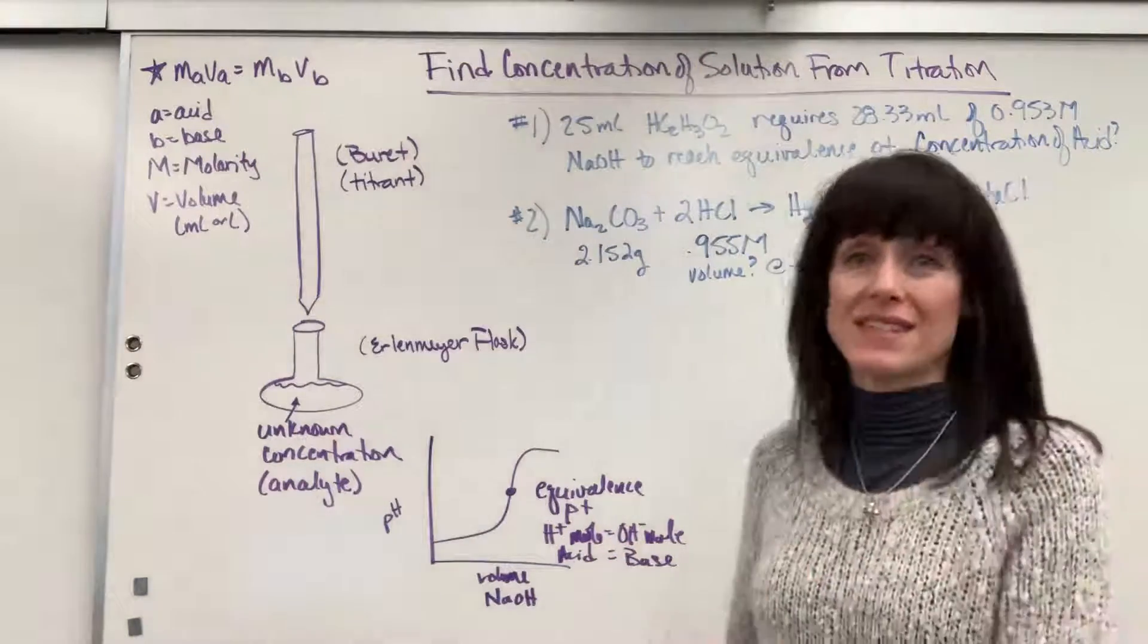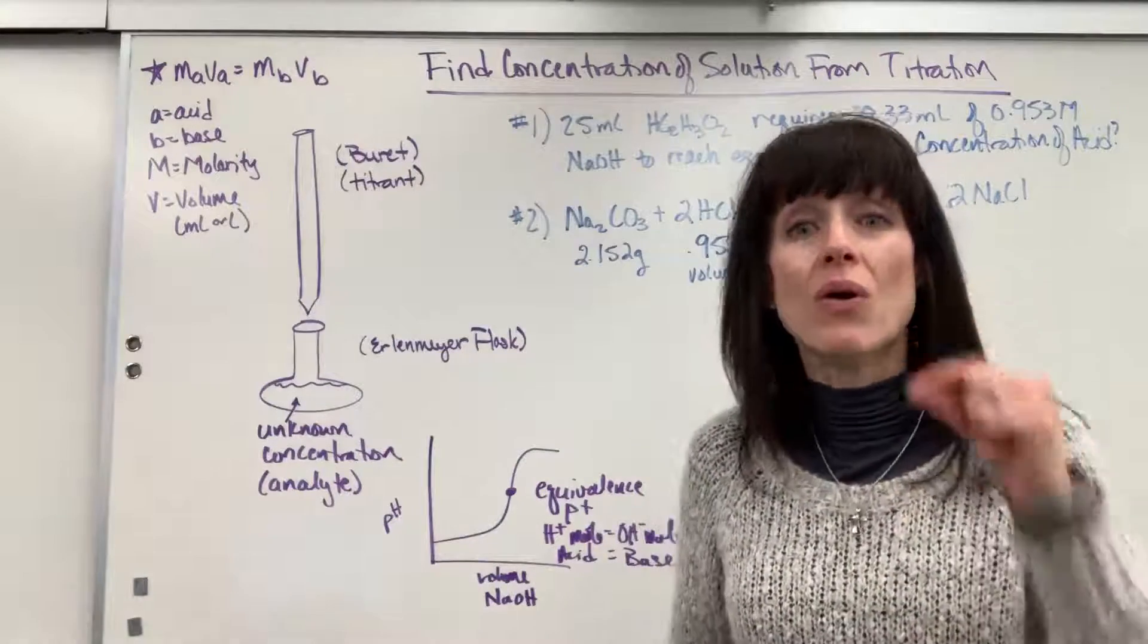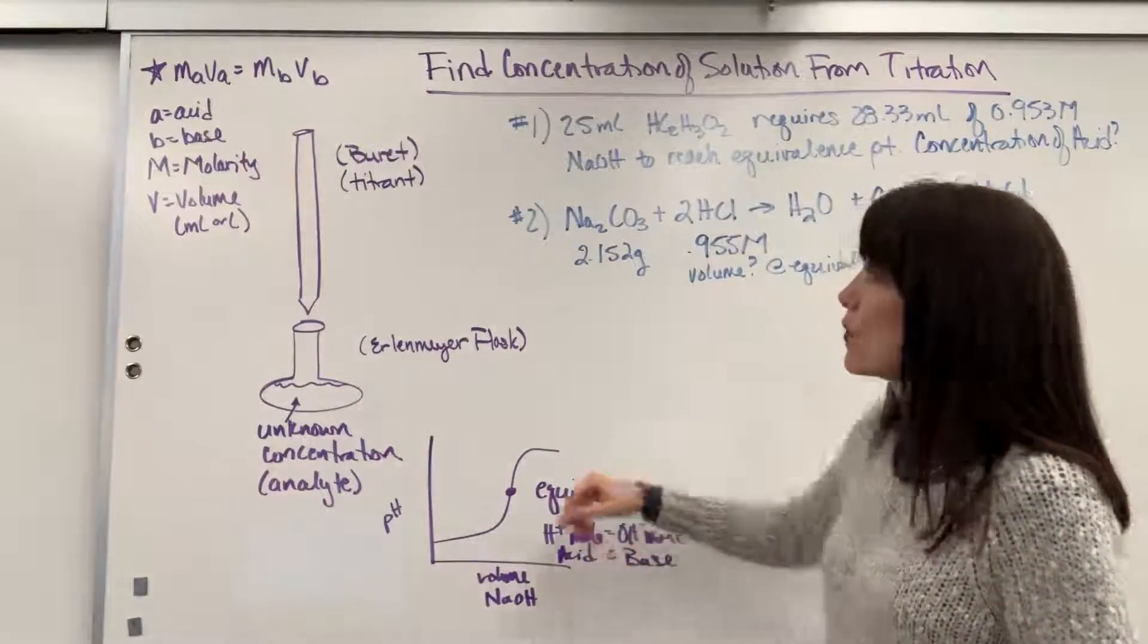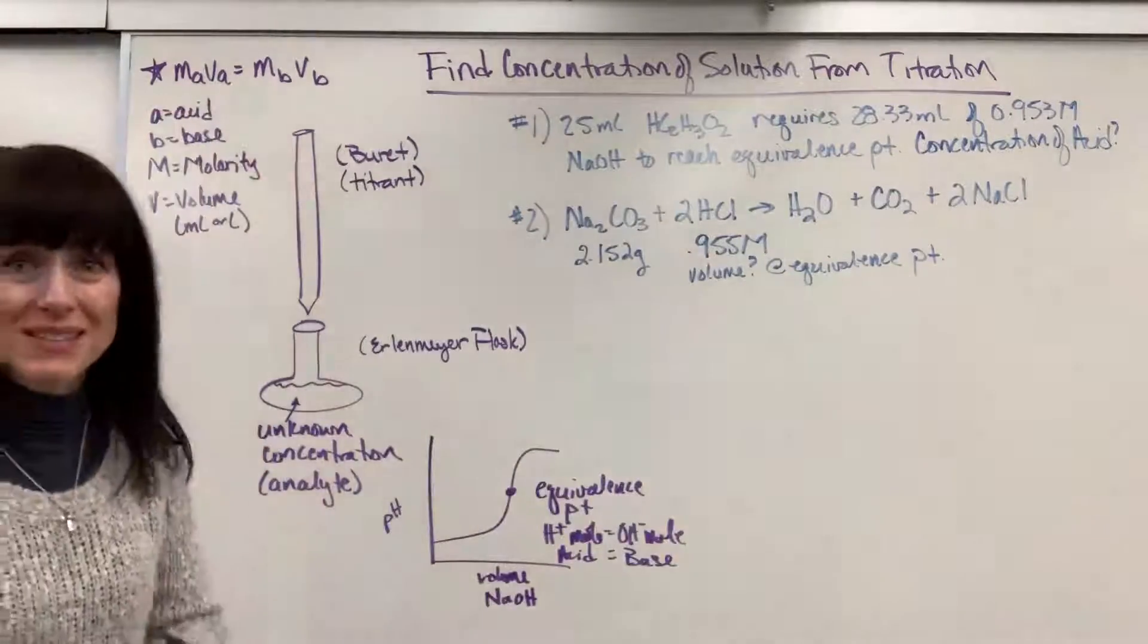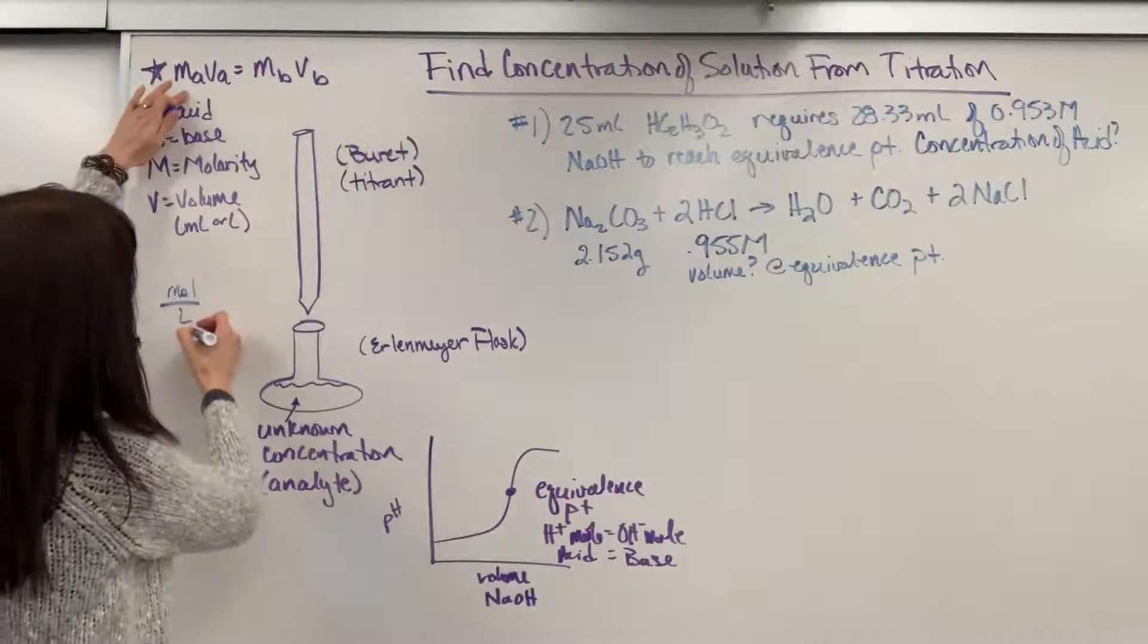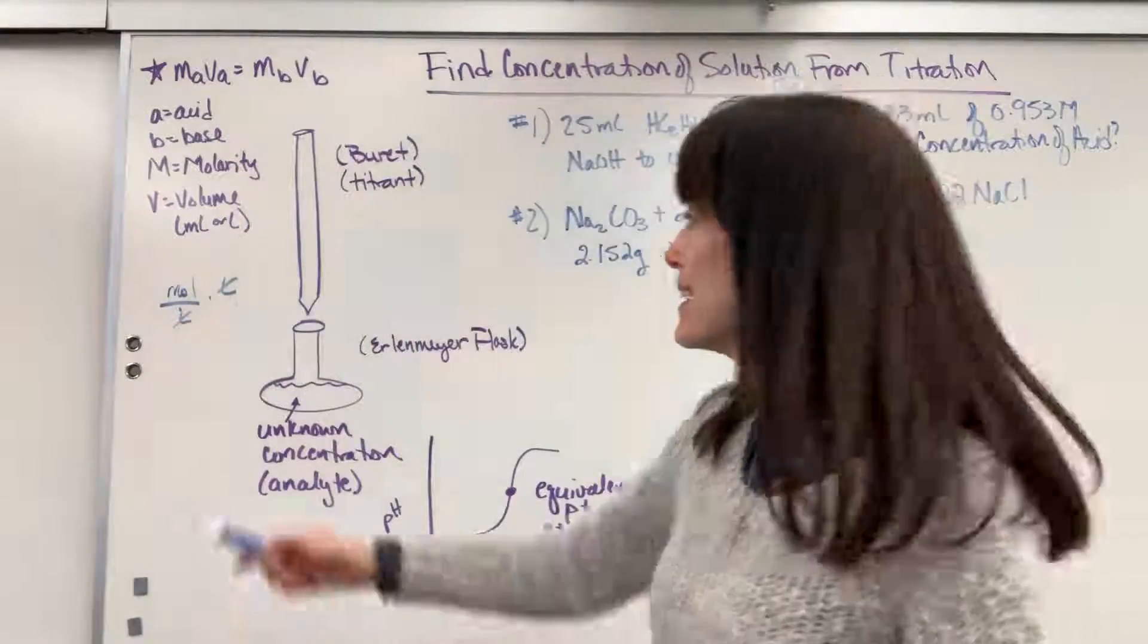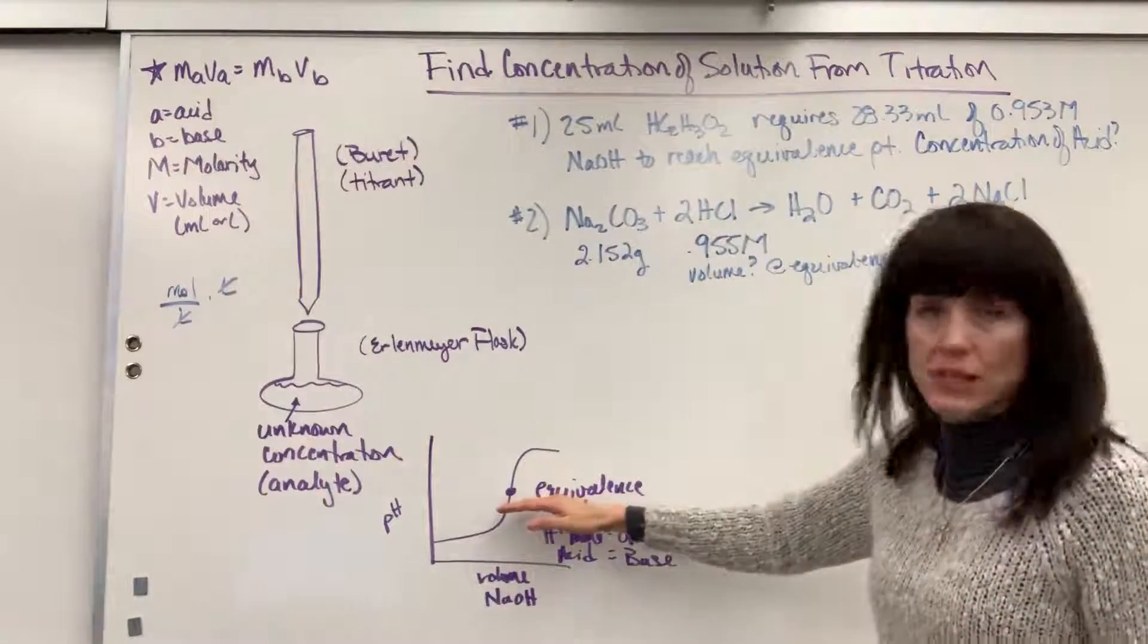So right there in the middle, the equivalence point - notice what I wrote down. It's the hydrogen moles equal the hydroxide moles, or the moles of the acid equal the moles of the base. Now something I want to emphasize - I didn't say molarity. It's not that the molarity is equal. It's the moles are equal. So because they're equal, remember if I look just at units on this, you've got moles per liter for molarity times volume, which is liters. Liter cancels and it gives you moles of acid equal moles of base.